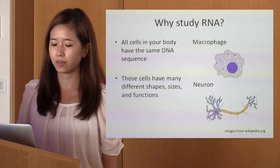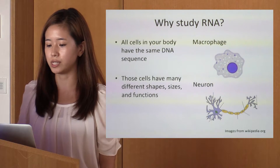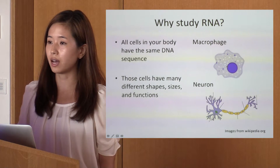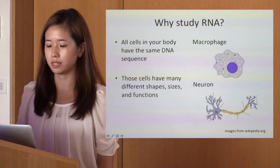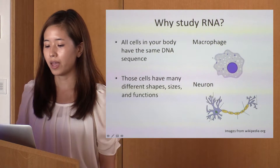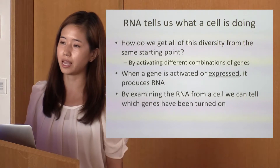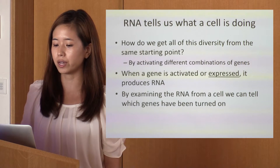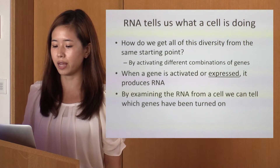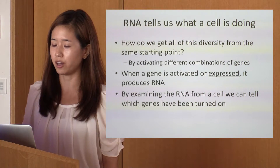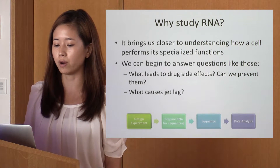So why do we study RNA? All cells in your body have the same DNA sequence, yet those cells have many different shapes, sizes, and functions. For example, macrophages are specialized in removal of dying cells and cellular debris, and neurons function to process and transmit information in the nervous system — and as you can see, they have completely different shapes. So how do we get all of this diversity from the same starting point? This is done by activating different combinations of genes. When a gene is activated or expressed, it produces RNA. By examining the RNA from a cell, we can tell which genes have been turned on. Studying RNA brings us closer to understanding how a cell performs its specialized functions.